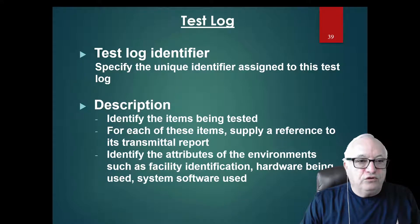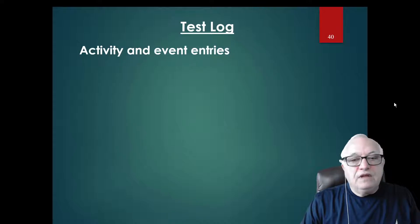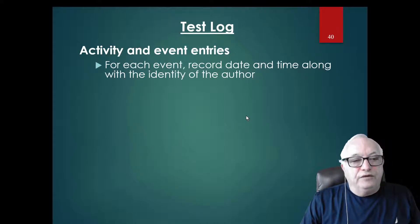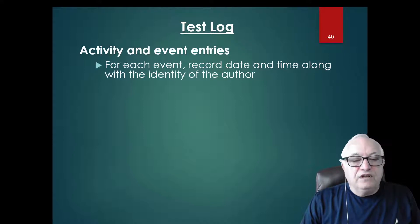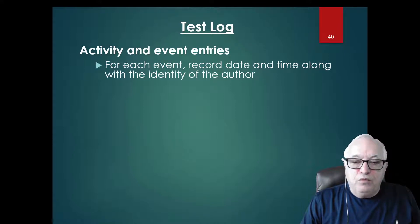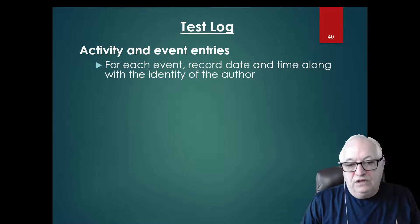The description identifies items to be tested. For each item, supply references to the transmittal report so you know what you tested and how it got into your lab. Also identify the attributes of the environment — facility identification, hardware being used, system software used. This allows you to compare: if it failed one day and passed two days later, you can check whether different hardware was involved.